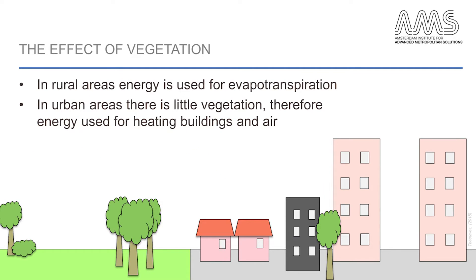Urban areas generally have a lower fraction of vegetation cover. In rural areas, part of the incoming energy is used for the evaporation of water from plants and soil. However, since urban areas have more impervious surfaces, the energy that would be used for evapotranspiration is instead used for the heating of the air and the surfaces. All these things combined can lead to higher air temperatures in the urban environment compared to the rural surroundings.